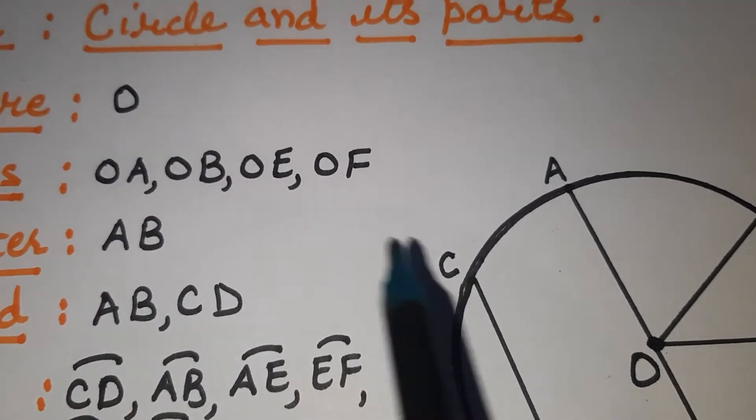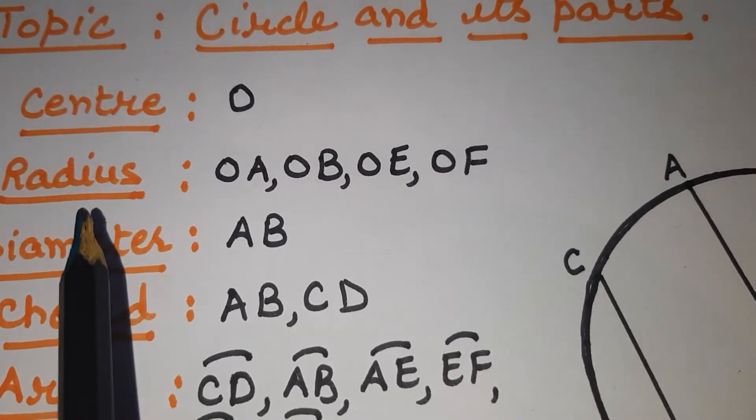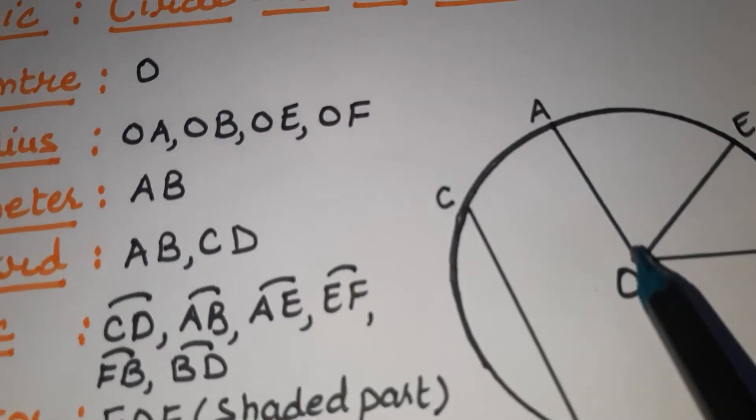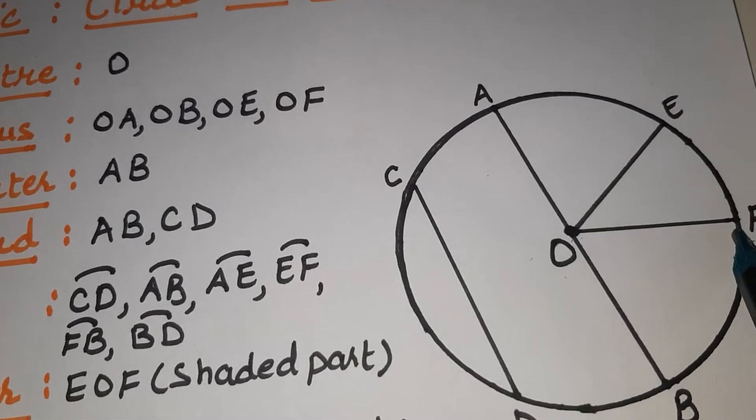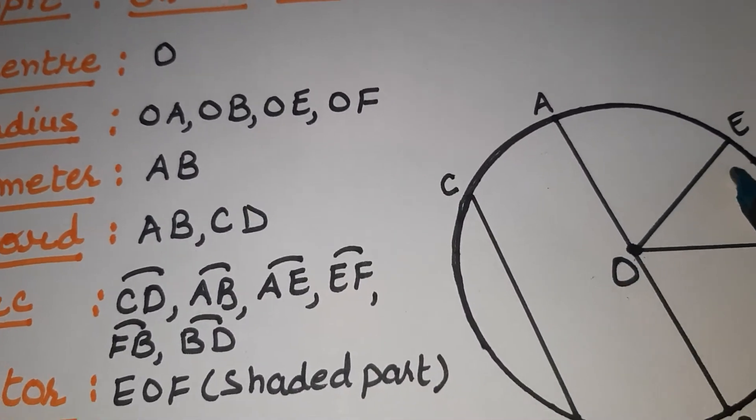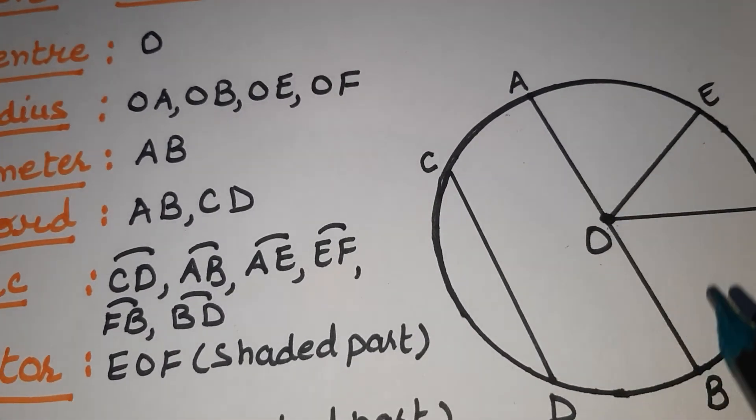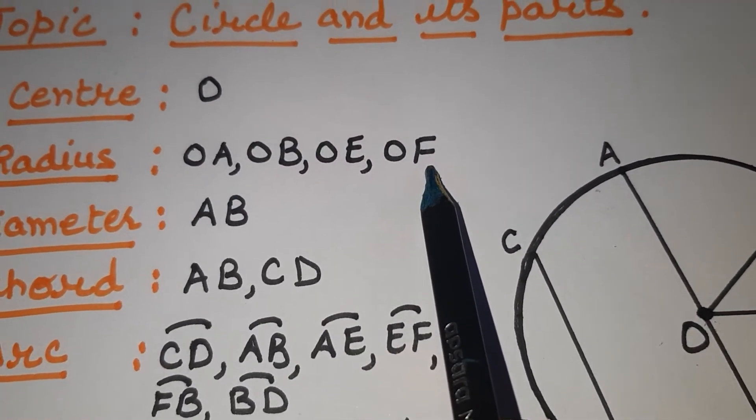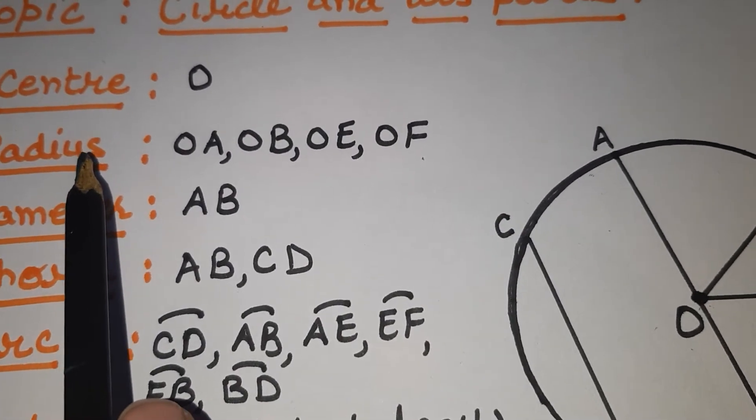Next is radius. The line starting from center to the edge of the circle. So OF is also radius, OA is also radius, OB is also radius. All these are radii. Radii is the plural of radius. OA, OB, OE, OF, if you see, all are starting from O, which means center.